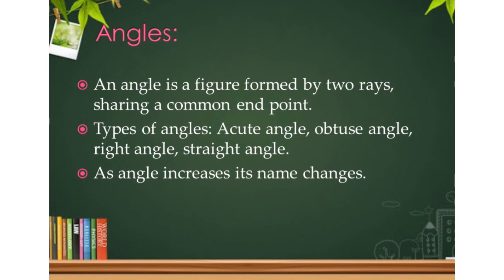Types of angles. We are going to start with the most basic: the right angle. If you understand the right angle properly, then the rest of the angles will be easy to learn. The types of angles are: acute angle, obtuse angle, right angle, and straight angle. As the angle increases, its name also changes, just like with polygons.